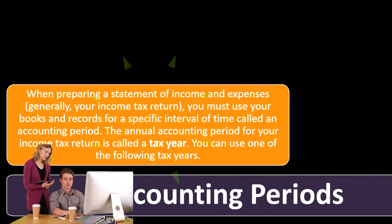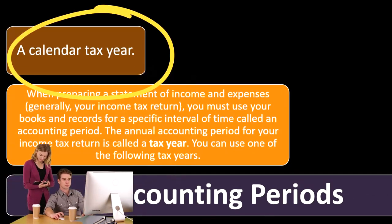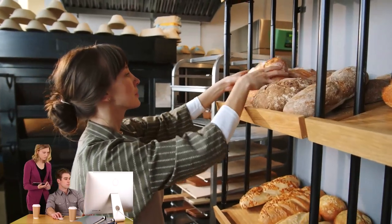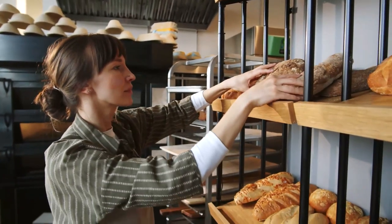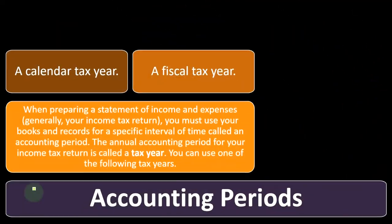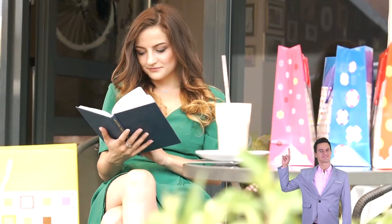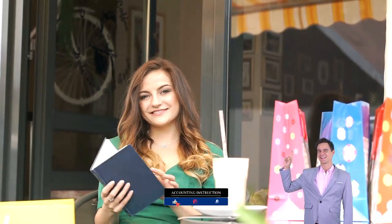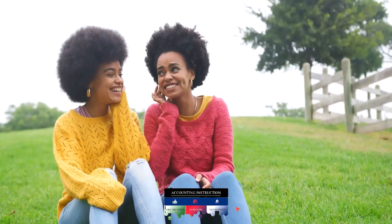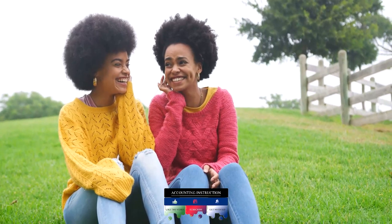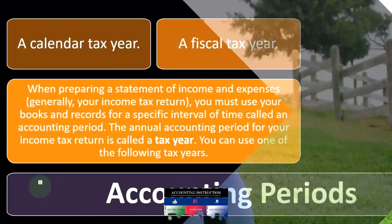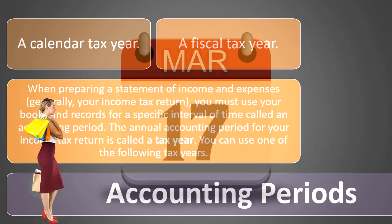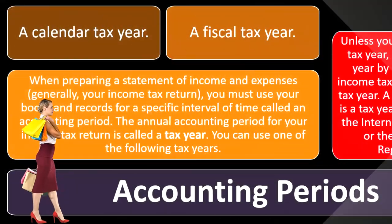You must have a tax year, and you can use one of the following: a calendar tax year or a fiscal tax year. If you are a Schedule C type of business, most people are probably on a calendar tax year because they're going to be reporting it with their Form 1040. You might have a situation where a fiscal year is different than the calendar year — the calendar year is obviously January through December, so if you have a different year for taxes, you could have a different fiscal year for your business.